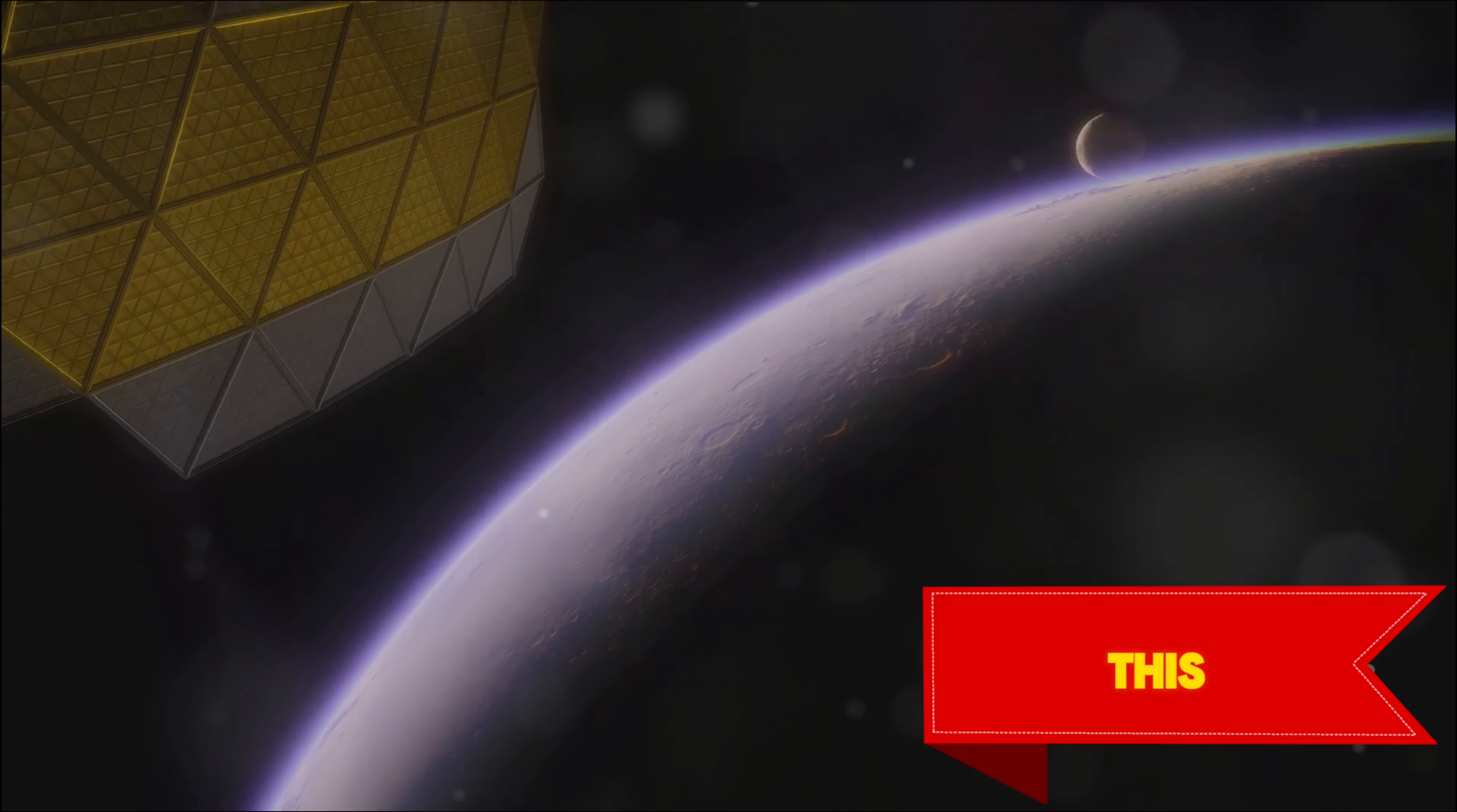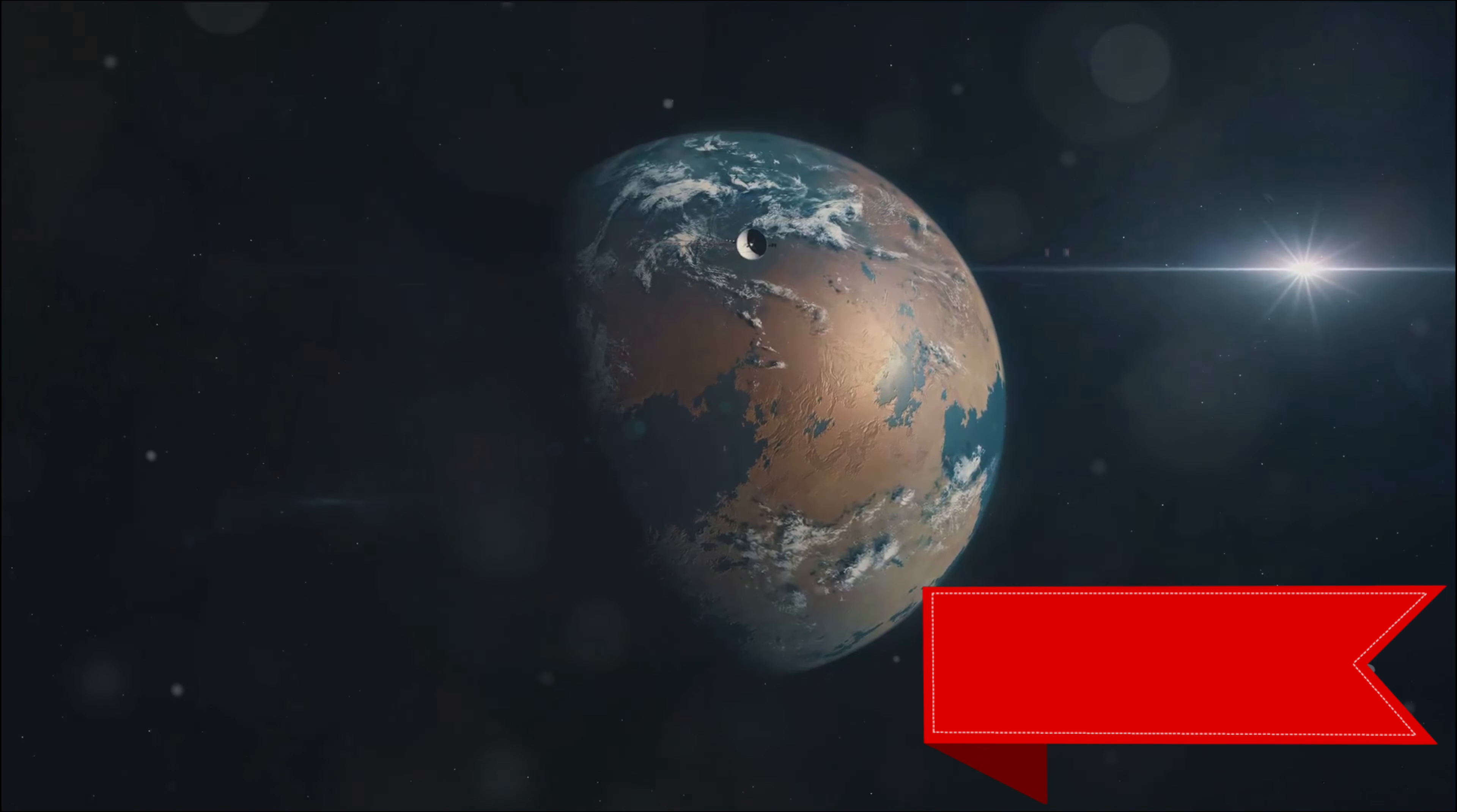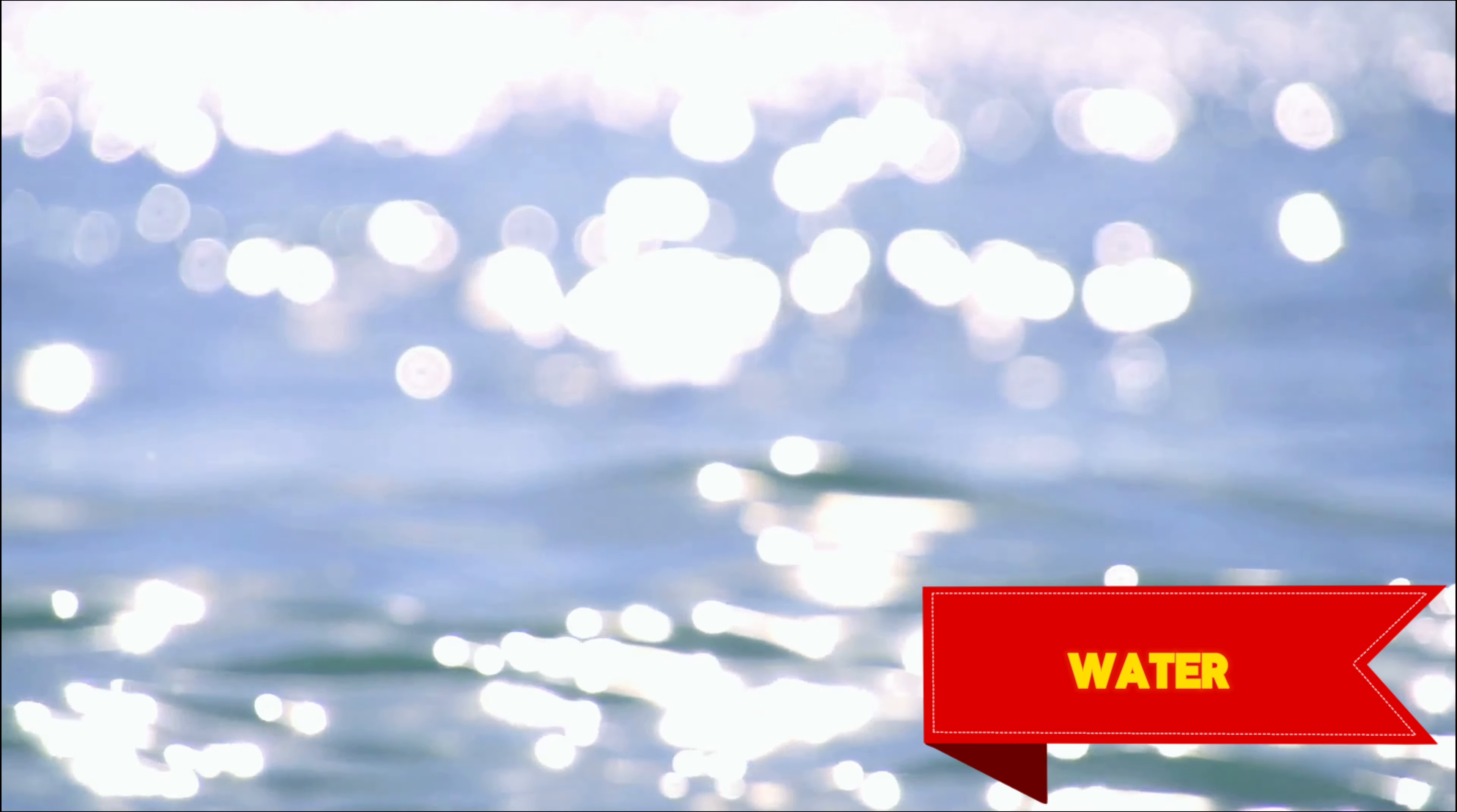Join us on this extraordinary journey beyond our solar system to explore these enigmatic worlds. First stop, Proxima Centauri b, an exoplanet just a stone's throw away in cosmic terms. Nestled in the habitable zone of Proxima Centauri, our nearest stellar neighbor, this intriguing world is only a little over four light-years away. Its position allows for temperatures that could potentially support liquid water, a crucial ingredient for life as we know it.